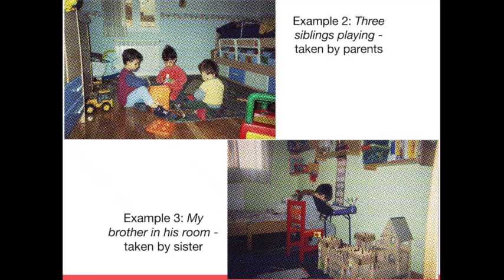These contrasts often reveal important but subtle differences in what children consider significant aspects of their daily lives and how these should be captured. For example, the two photographs we are showing apparently depict similar scenes — children playing in their rooms. But the first was taken by the parents and depicts three siblings playing together in what could be seen as quality evening time. In contrast, the second photograph was taken by the older sister, the focal participant, and can primarily be seen as a reflection of her relationship with her brother and the importance of her brother in her life.